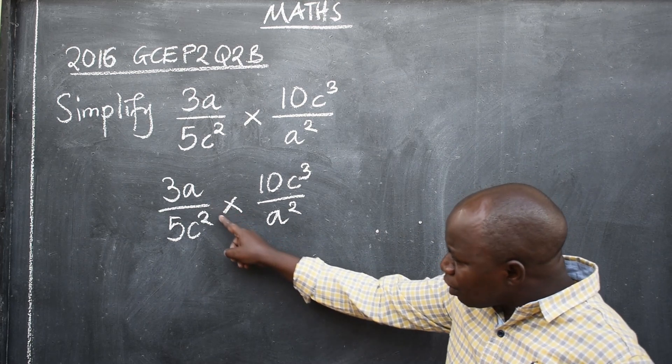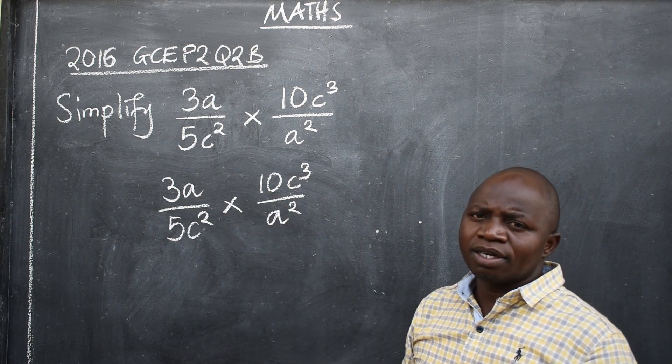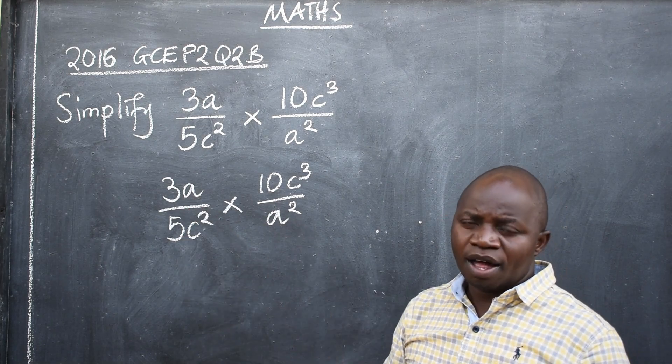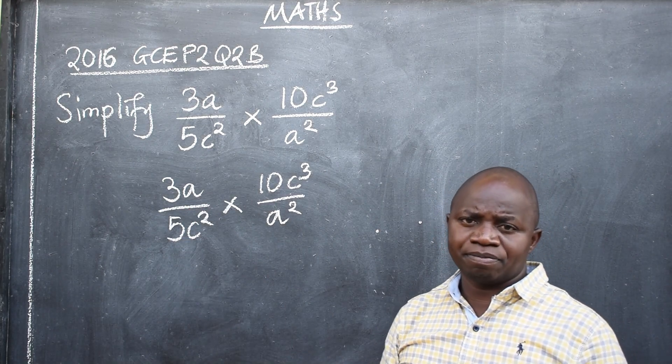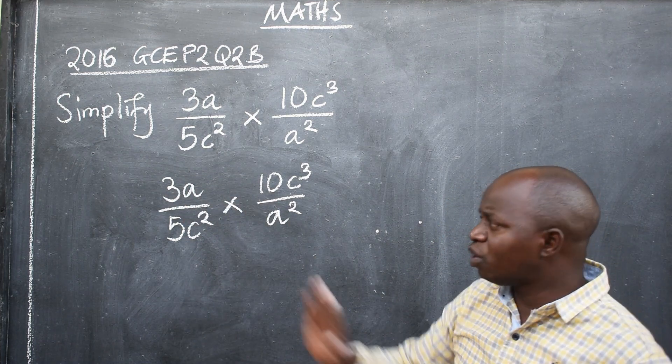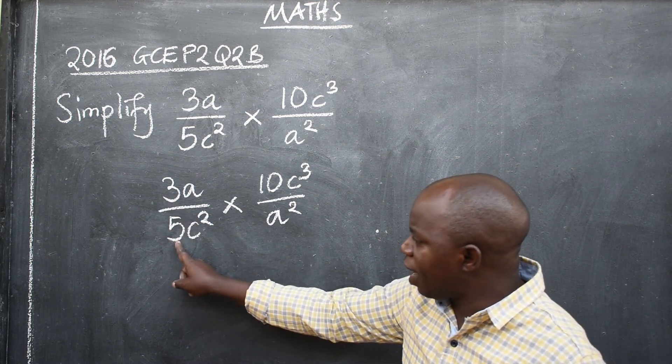When you have a multiplication symbol in between the fractions, just know that you can reduce the numbers and also variables. So we are going to start with the numbers. Look at the numbers that have been provided. We have 3, we have 5 and 10.